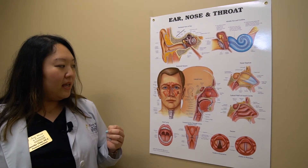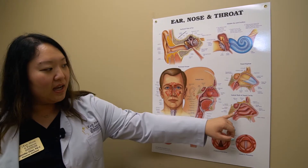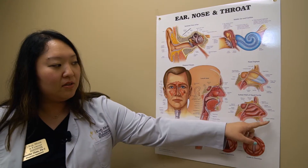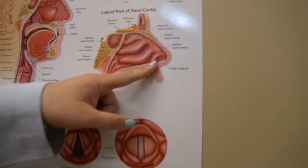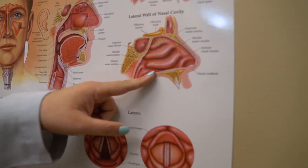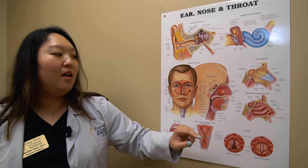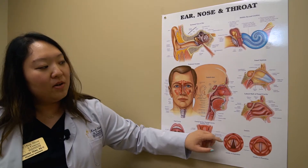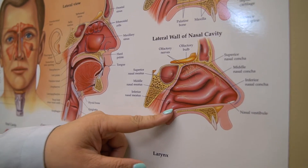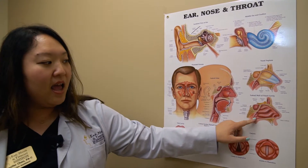If everything looks great, you also have a sinus in the back called the sphenoid sinus. So then what we do is we move along the bottom back here and take a look to see if anything is draining over there as well. Over here is your adenoid tissue, which can possibly be infected as well, so I take a look at that.